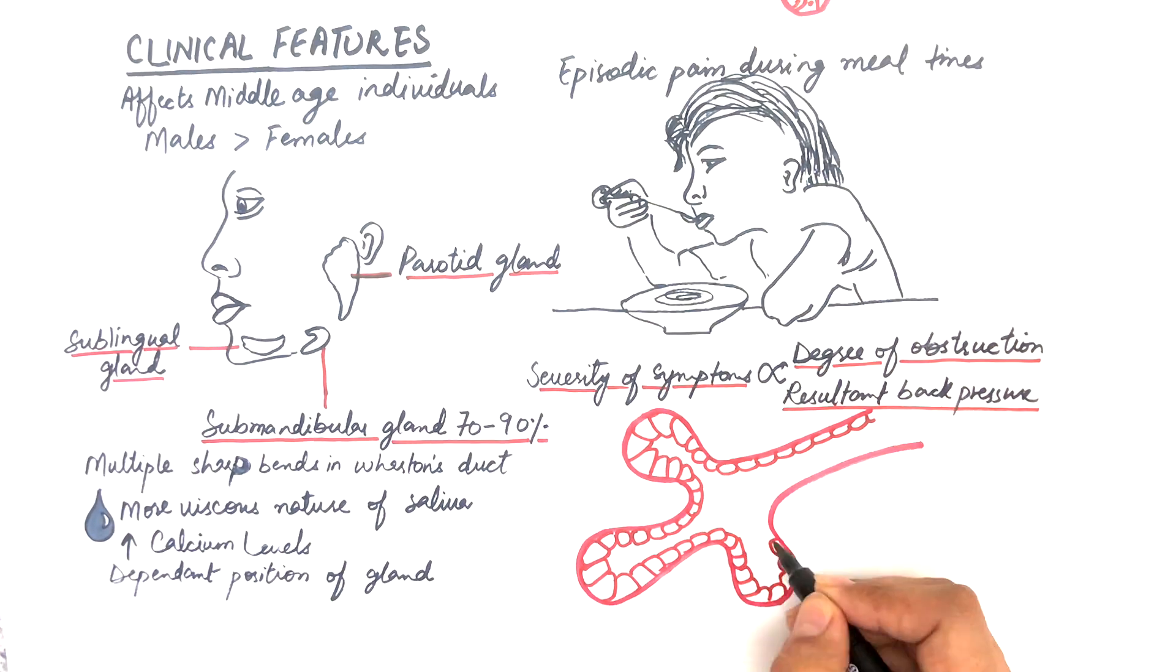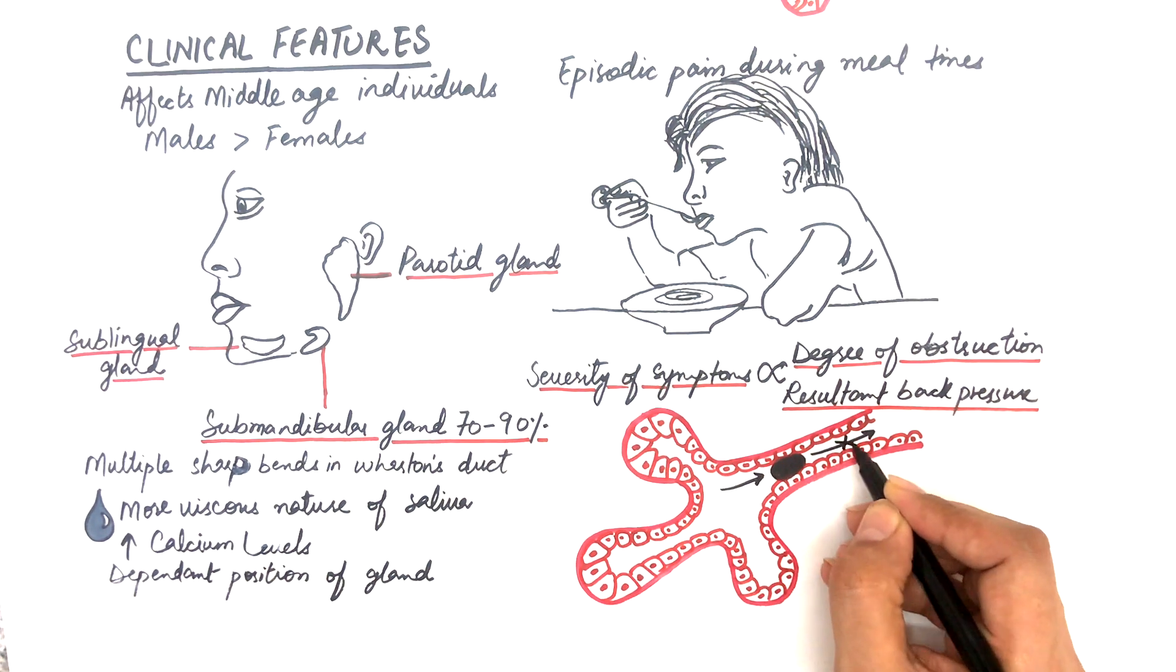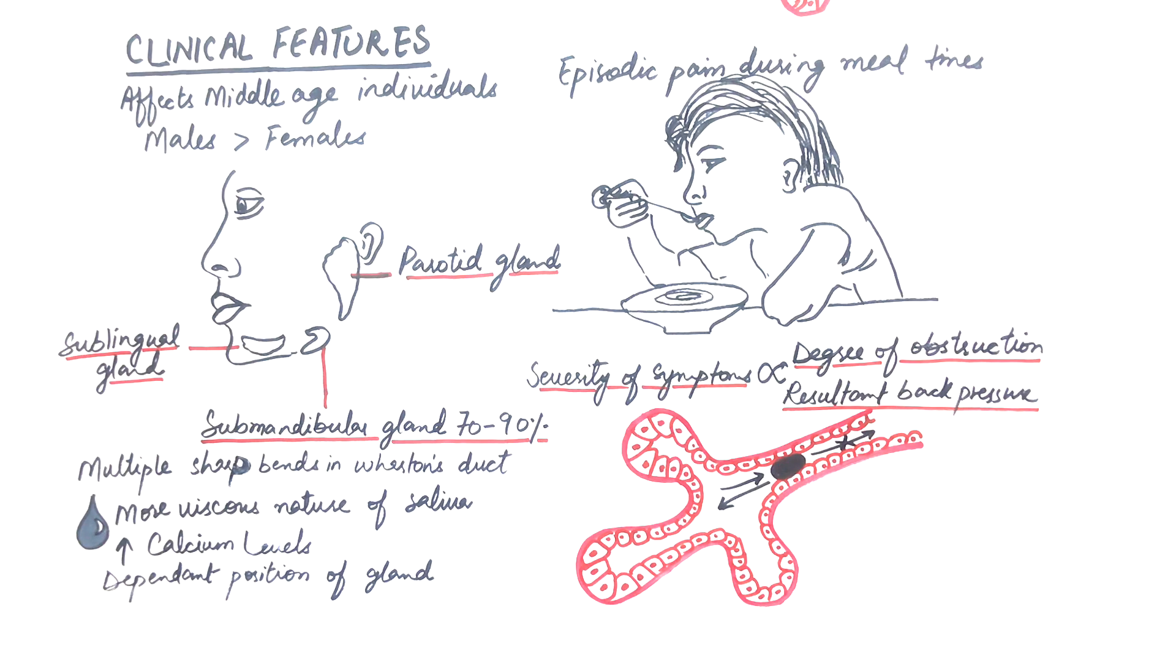That is, if the duct is completely obstructed by a sialolith, the saliva produced within these glands cannot move beyond the obstructed zone, hence moves backwards resulting in high back pressure and extreme pain.